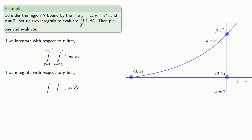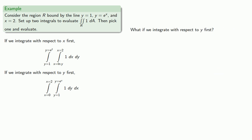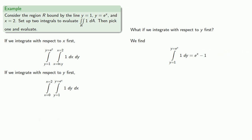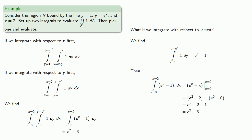So if we integrate with respect to y first, we move vertically. If we let y vary, then y goes from y equals 1 to the graph of y equals e to the x — those will be our limits. Then x varies from x equals 0 to x equals 2. Since our integrand is e to the x, this is the world's easiest antiderivative, and we can find the second integral, which gives us the area of the region.